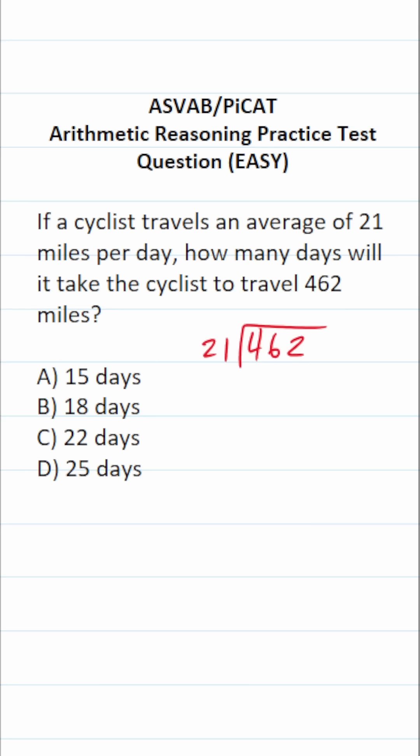And we start by asking ourselves, how many times does 21 go into 4? It doesn't. How many times does 21 go into 46 without going over? Well, 20 times 2 would be 40, 20 times 3 would be 60. So we know 21 is going to go into 46 two times without going over.